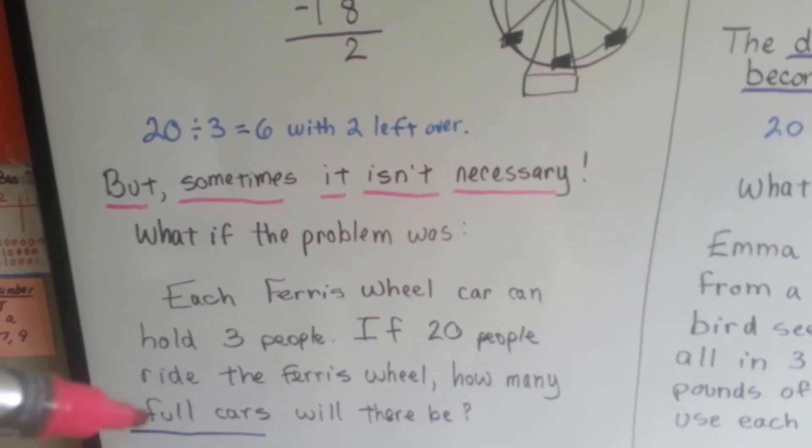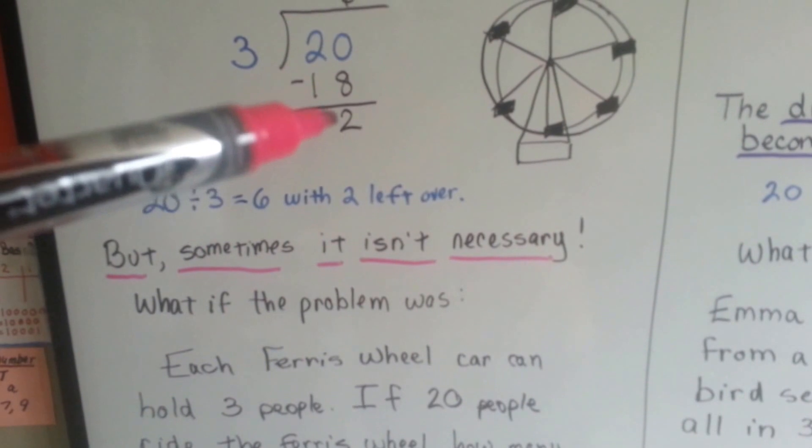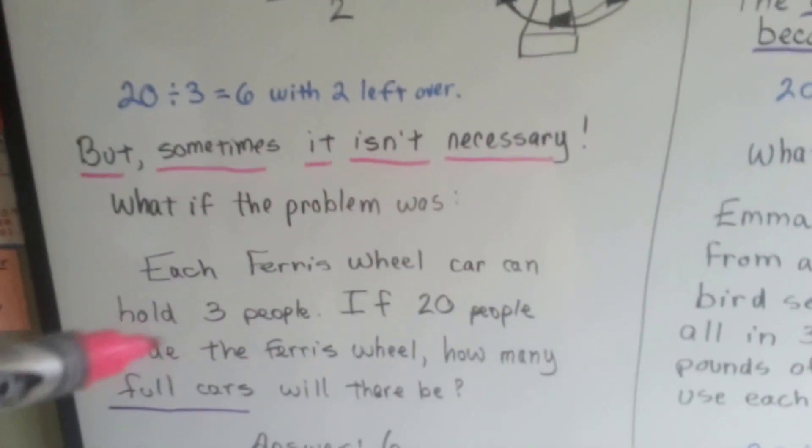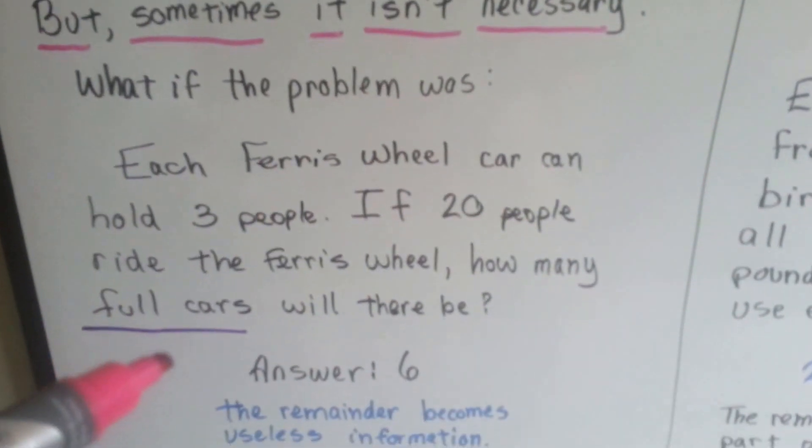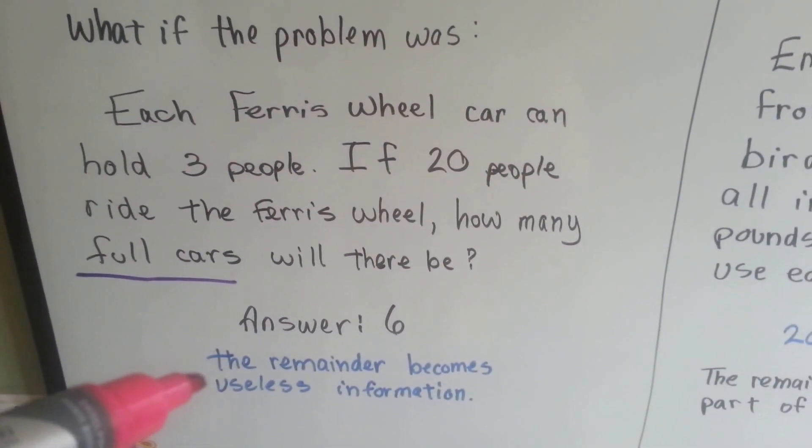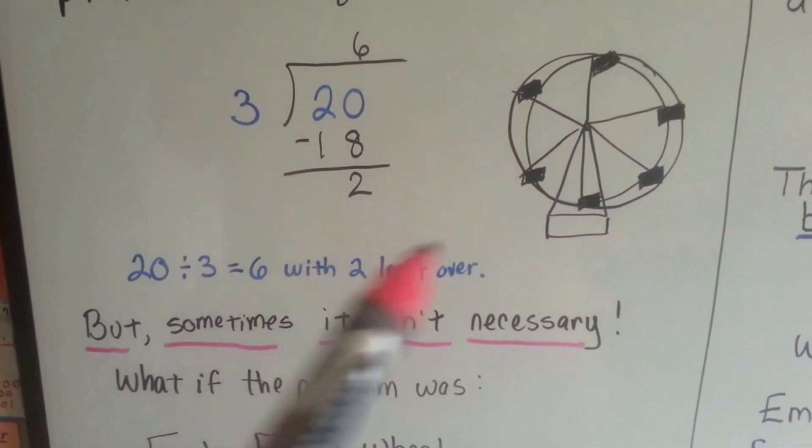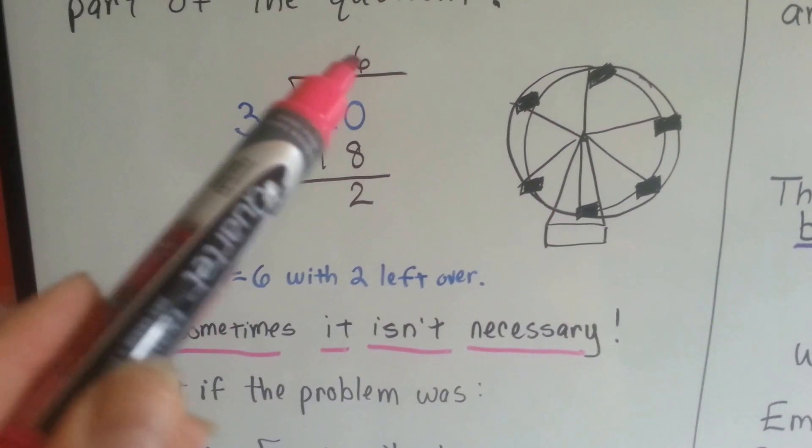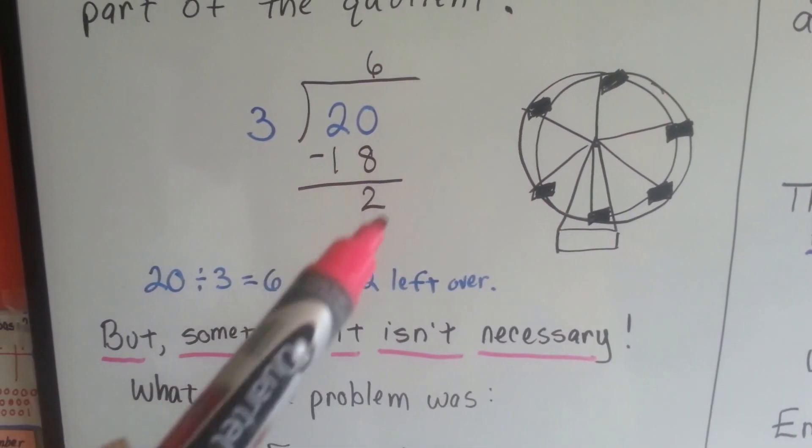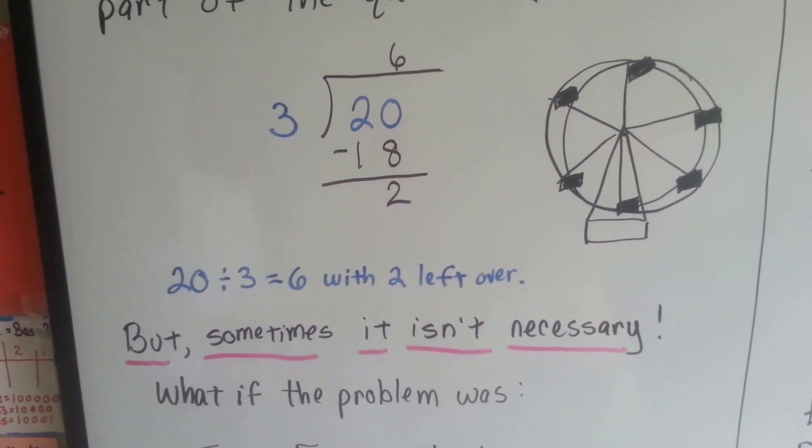See, full cars is important. If we have 2 left over when we're doing our division, that won't make a full car. That's just 2 people. It's asking how many full cars will there be? The answer is 6. The remainder became useless information. It's just not important. It wants to know full cars. There's 6 of them. These 2 people wouldn't fill a car, so it's not important. Our answer is 6.